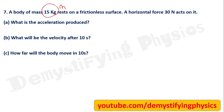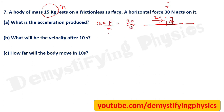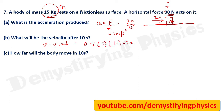A body of mass 15 kg rests on a frictionless surface. A force of 30 Newton acts on it. Acceleration = F/m = 30/15 = 2 m/s². Remember all values must be in SI units — convert grams to kg if needed. To find velocity after 10 seconds, use v = u + at. Since u = 0, v = 2 × 10 = 20 m/s.